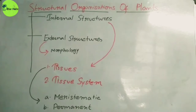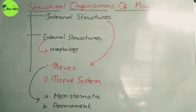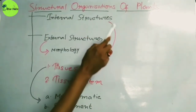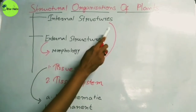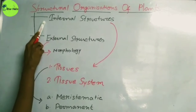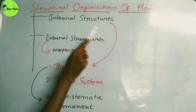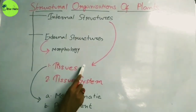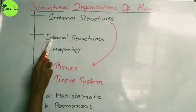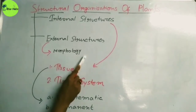Hello everyone. Welcome to Baya Bali channel. The main topic of discussion is the structural organization of plants, and this topic can be discussed into two main parts: number one is the internal structures of plants, and number two is the external structures of plants. The internal structures of plants can be discussed into two main parts — the tissues and the tissue system. The external structures are the detailed information about the morphology of the plant.